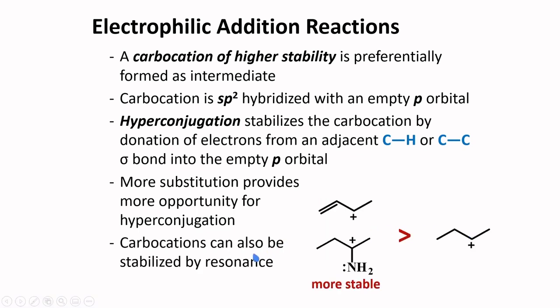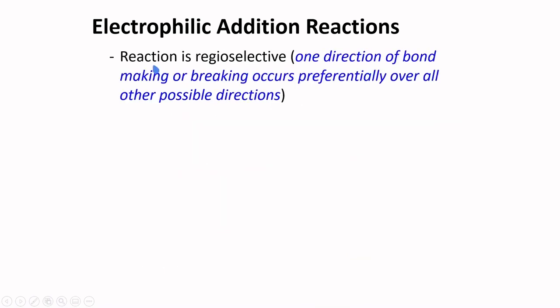Carbocations can also be stabilized by resonance. For example, if a double bond is right next to the carbocation, then it will be more stable if there are no double bonds right next to that positively charged carbon. A lone pair from an atom right next to this carbocation can also stabilize this species.